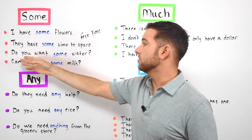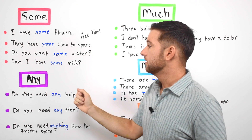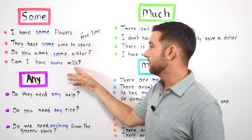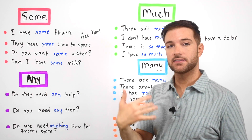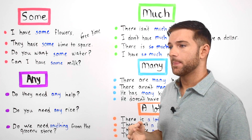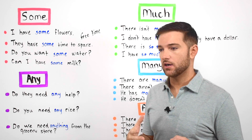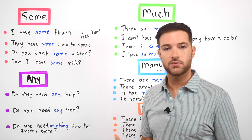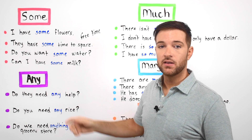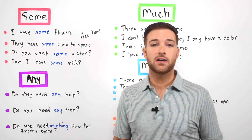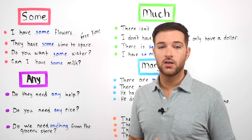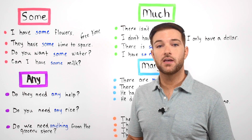'Can I have some milk?' — again, we're talking about getting offered something. We're not sure about the specific amount, so we use the word 'some.' Note that 'some' can be used with both countable and uncountable nouns — we'll cover countable and uncountable nouns in more detail in another lesson.